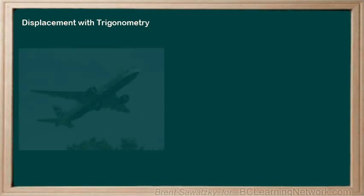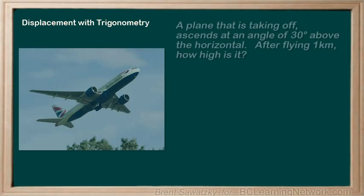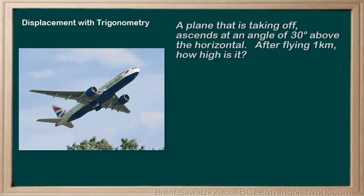Another example: a plane that is taking off ascends at 30 degrees above the horizontal. After flying 1,000 meters, or 1 kilometer, how high is it? In this case, we're given the information about the resulting displacement — 1,000 meters at 30 degrees above the horizontal — so we have both magnitude and direction.